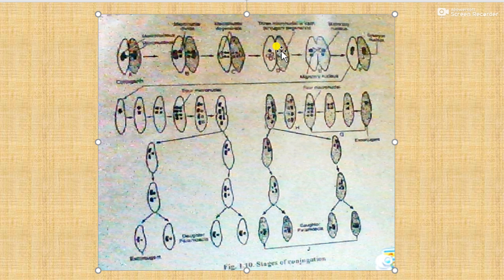The remaining micronucleus of each conjugate divides mitotically into two unequal pronuclei - a larger stationary pronucleus and a smaller migratory pronucleus. The migratory pronuclei are exchanged between conjugants and fuse with the stationary pronuclei to form a synkarion. In the synkarion, the diploid number of chromosomes is restored and exchange of hereditary material takes place.